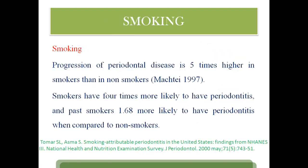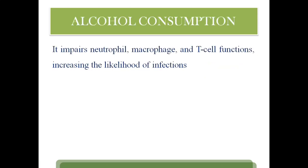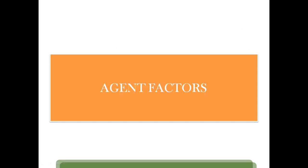Smoking is one of the biggest factors causing periodontal disease, proven by many researchers. One study has proven five times higher periodontal disease in smokers compared to non-smokers, and most studies have proven a causal link between smoking and periodontal disease. Alcohol consumption also has a bad effect on periodontal structures because it impairs neutrophil, macrophage, and other inflammatory functions, increasing chances of infection.